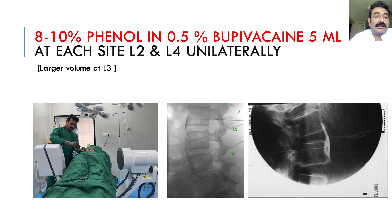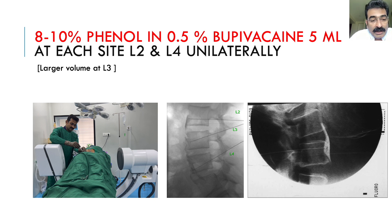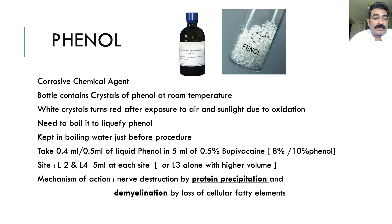After confirmation with dye, phenol is injected: 10% phenol in 0.5% bupivacaine, 5 ml total. Liquefied phenol — 0.4 to 0.5 ml — is added to 5 ml bupivacaine to make approximately 8 to 10% phenol, and it is injected slowly. Great caution must be taken to prevent it from spilling on the patient's body, our own body, or particularly our face or eyes, as it is a very corrosive agent.